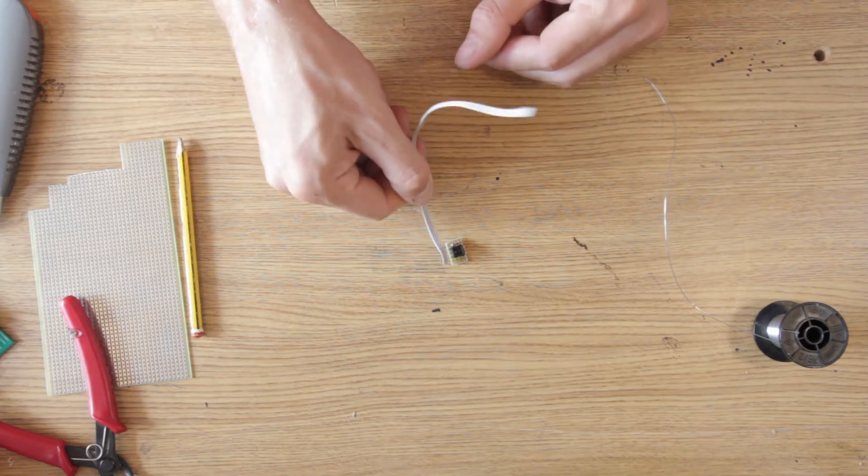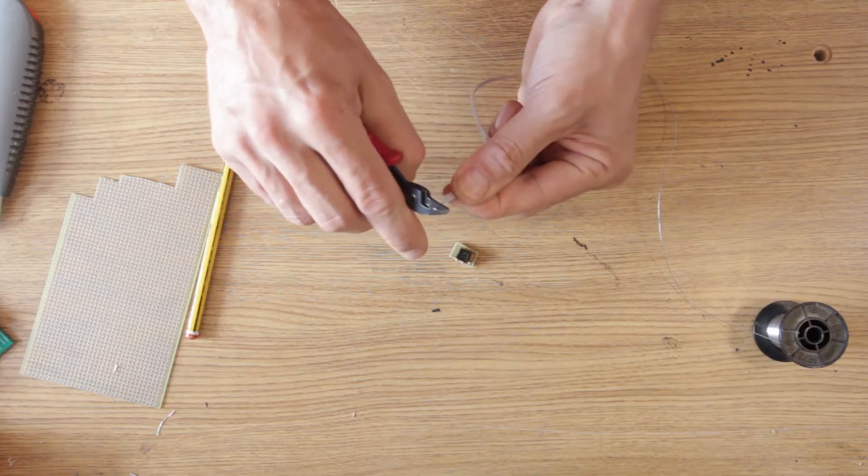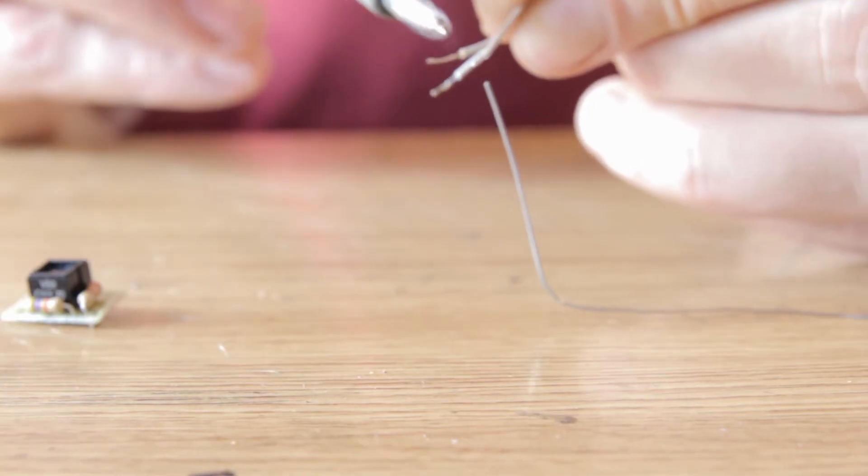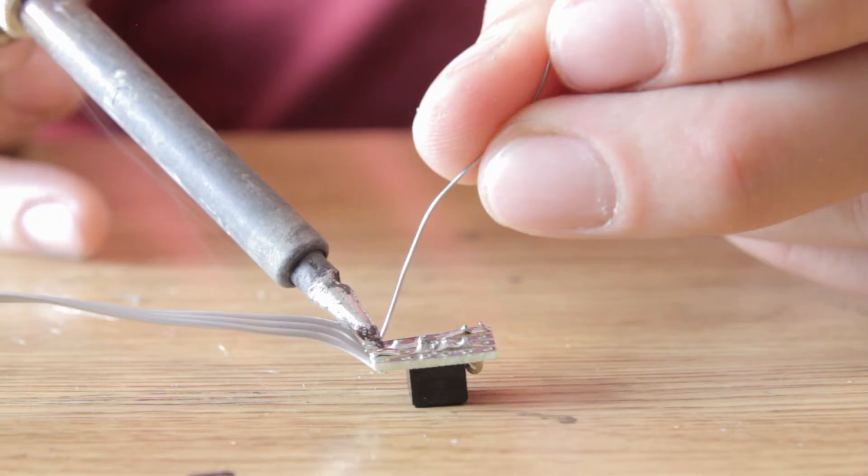Next we prepare the cable. We need three connections so I pull off three cables from a larger ribbon cable. Strip the ends, tin the tips, insert into the module, and solder.